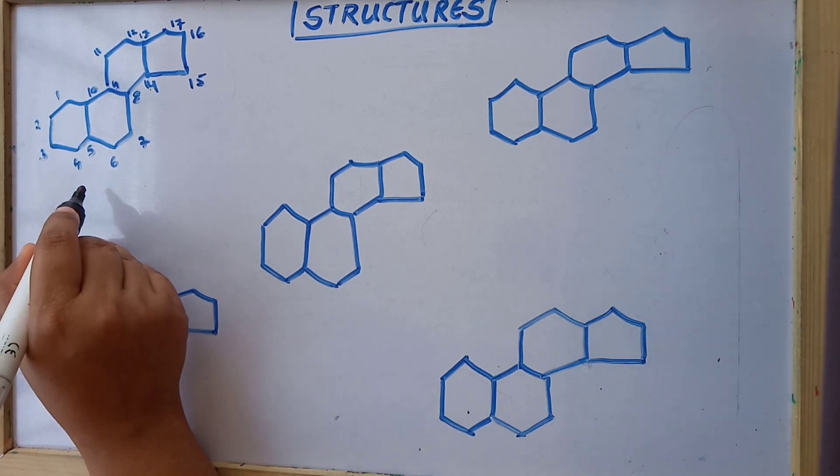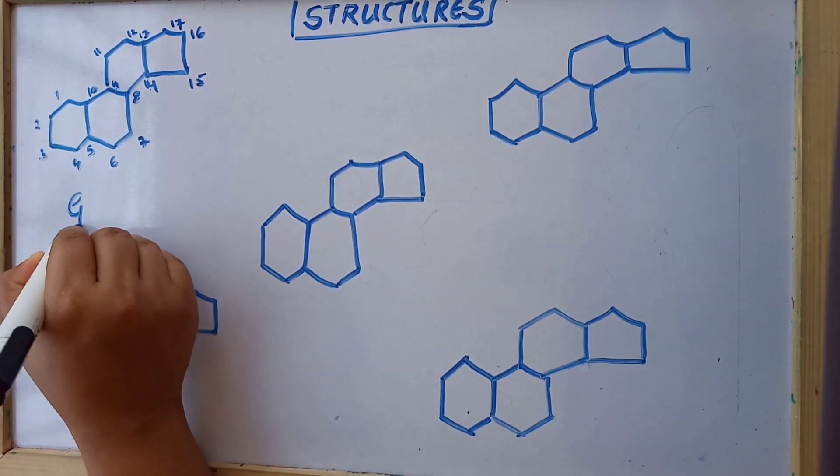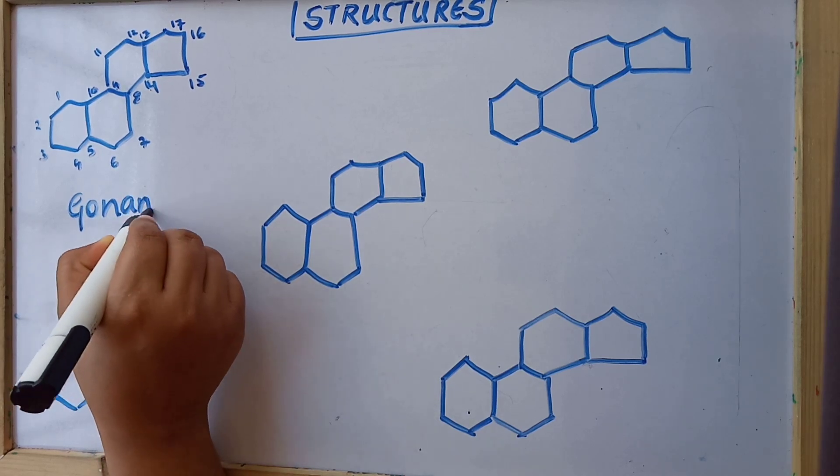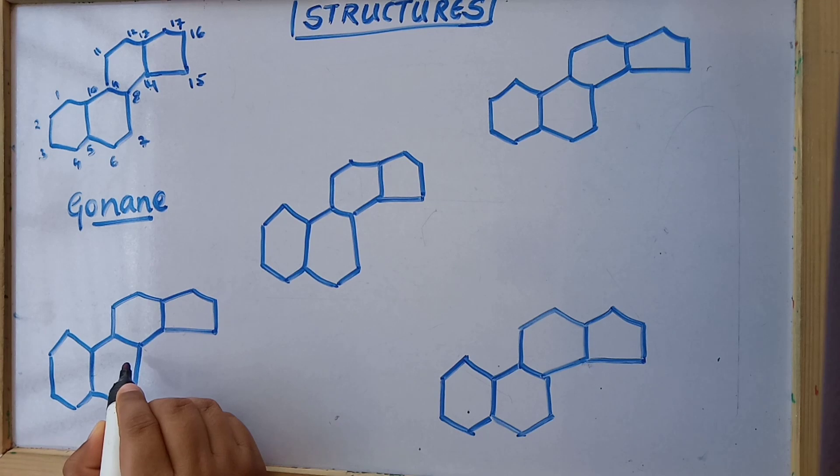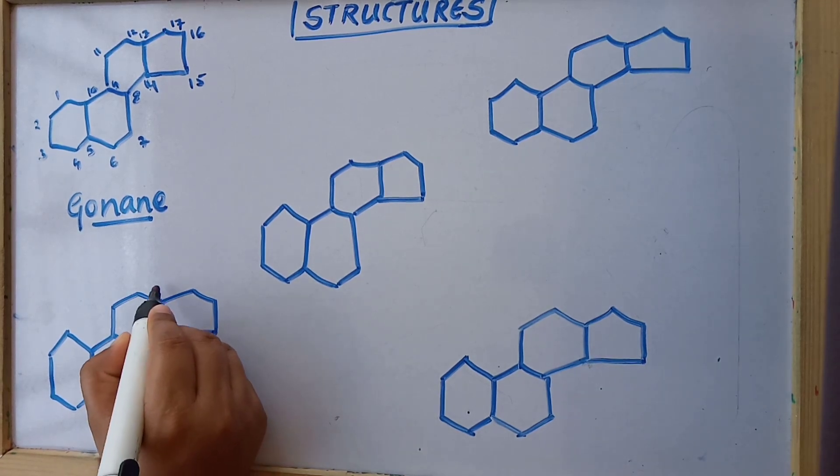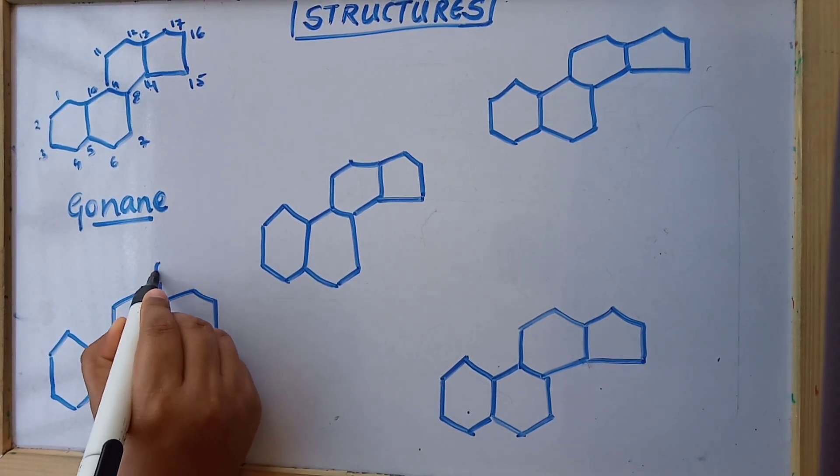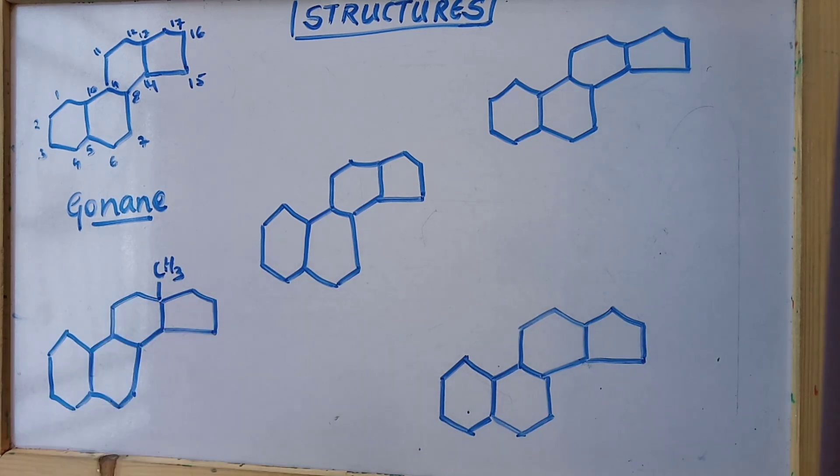If in this structure we place CH3 over the 13th position, then this is formed as estrane.